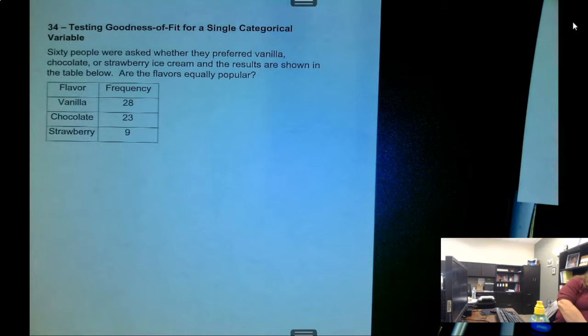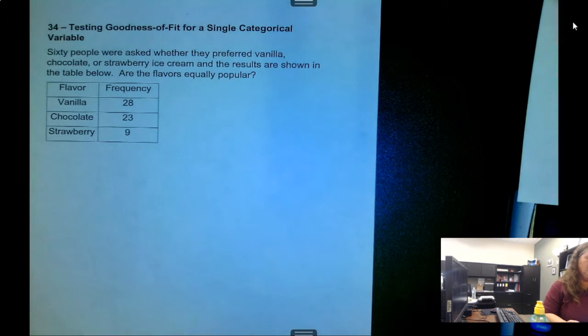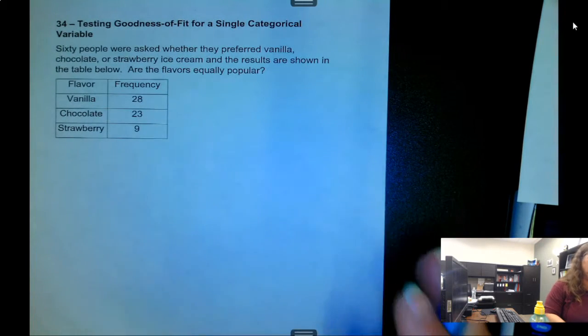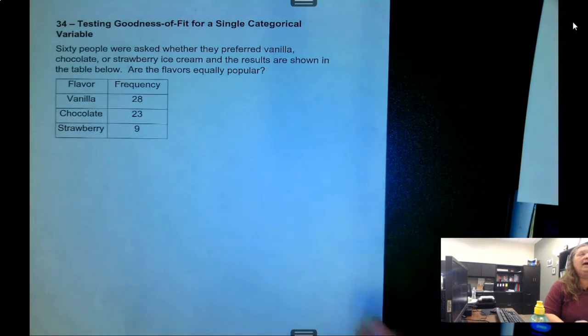So far all the work we've done has been working with quantitative data. Now we're going to look at some tests that involve categorical data. The first one is goodness of fit and it's for a single categorical data. With this type of problem you're seeing if the data, the distribution of the data, agrees with some assumed distribution.